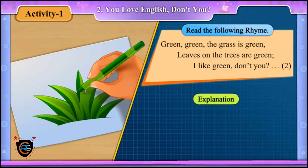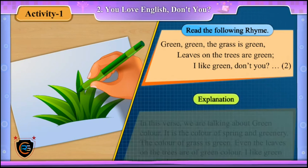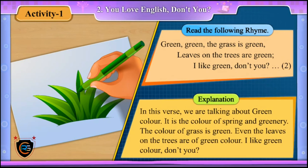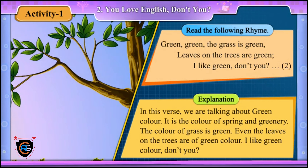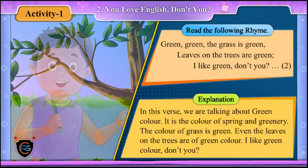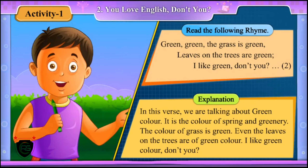Explanation. In this verse, we are talking about green colour. It is the colour of spring and greenery. The colour of grass is green. Even the leaves on the trees are of green colour. I like green colour, don't you?